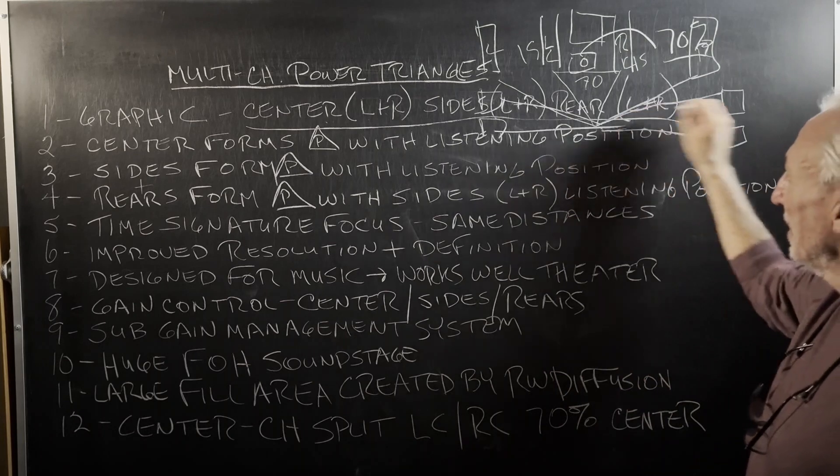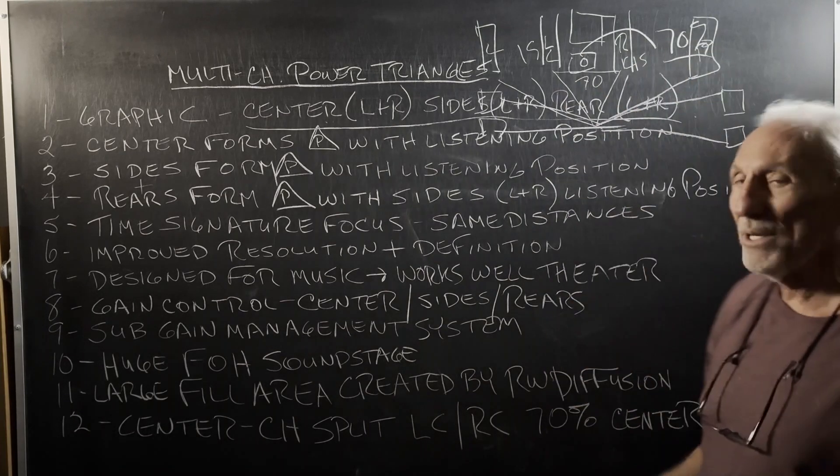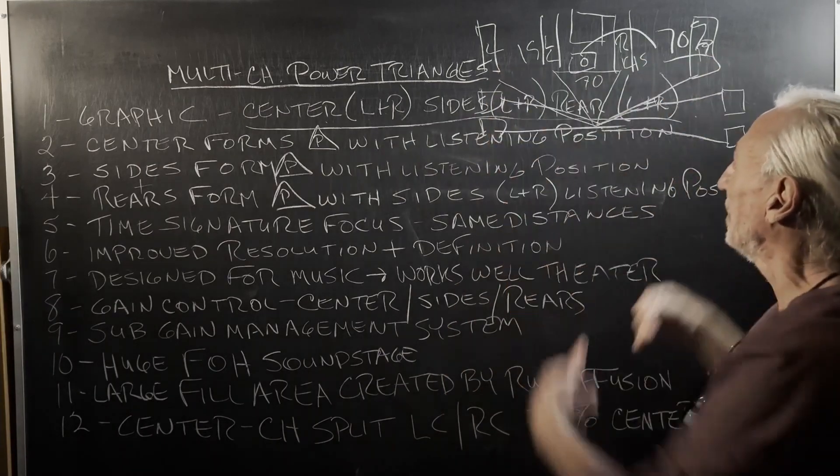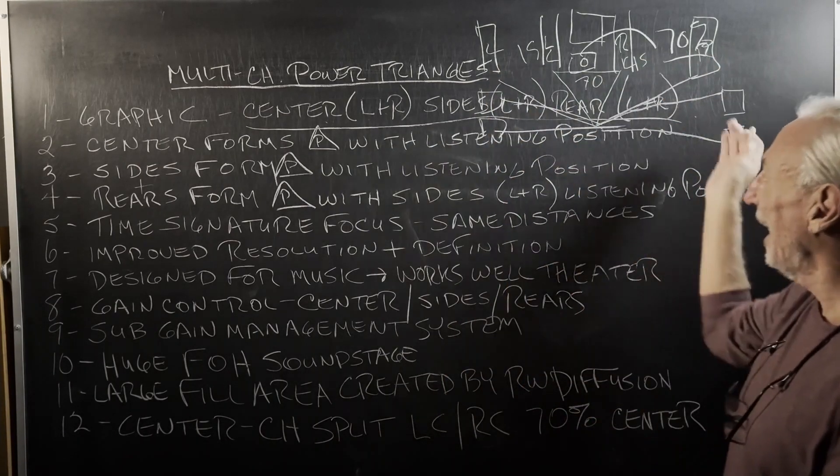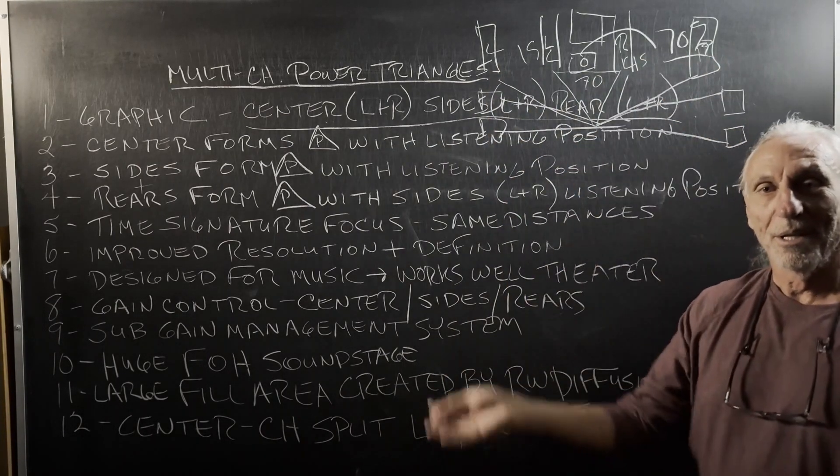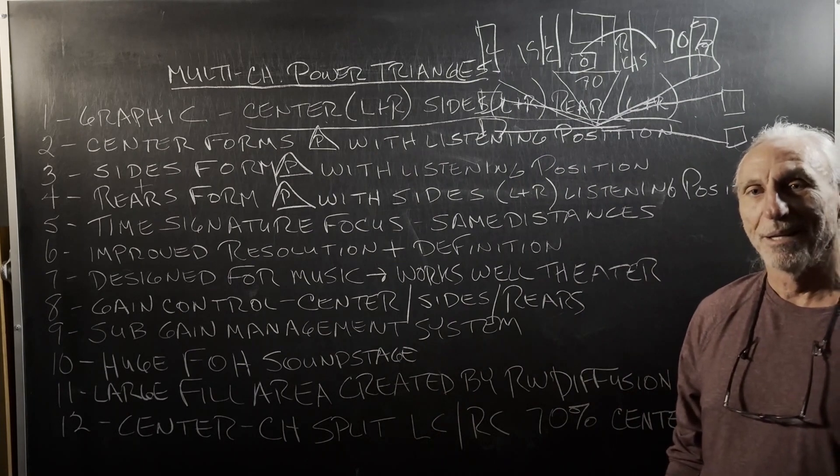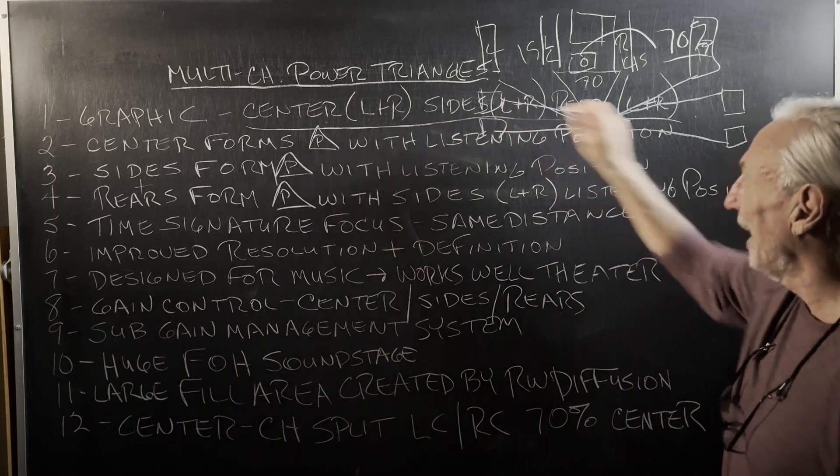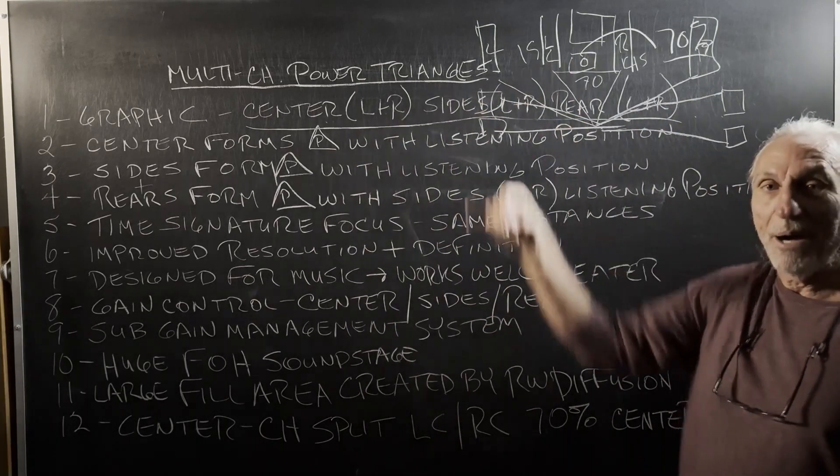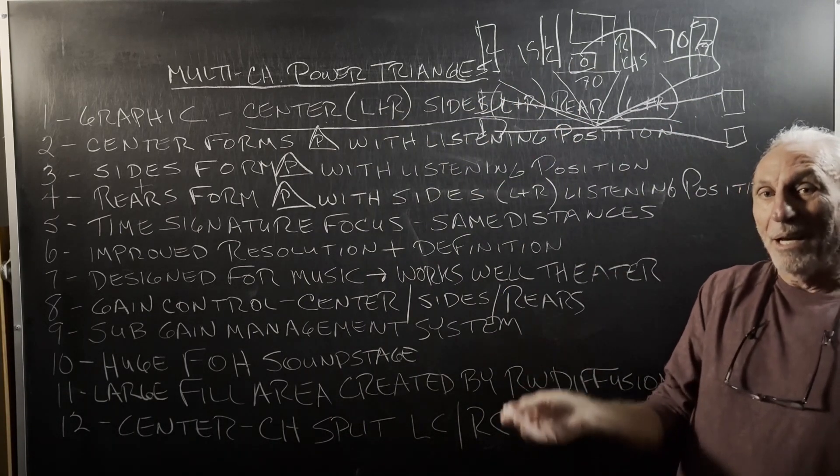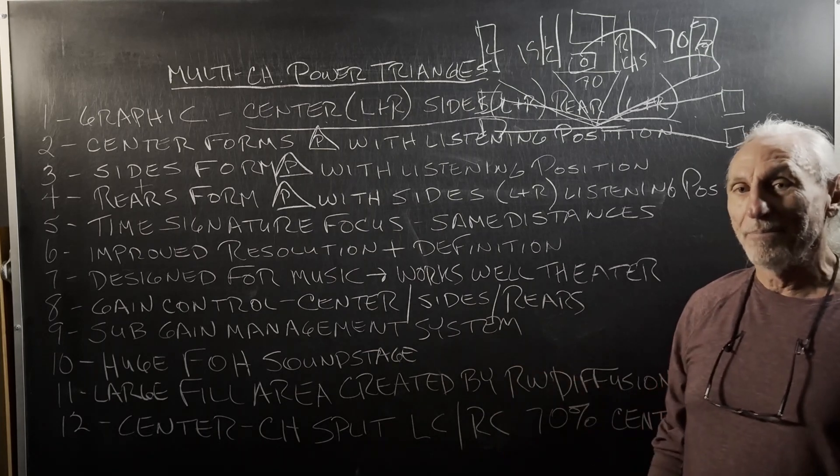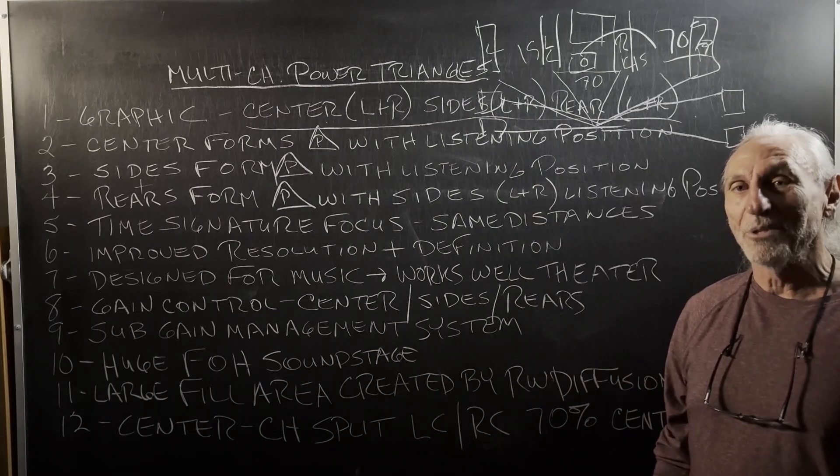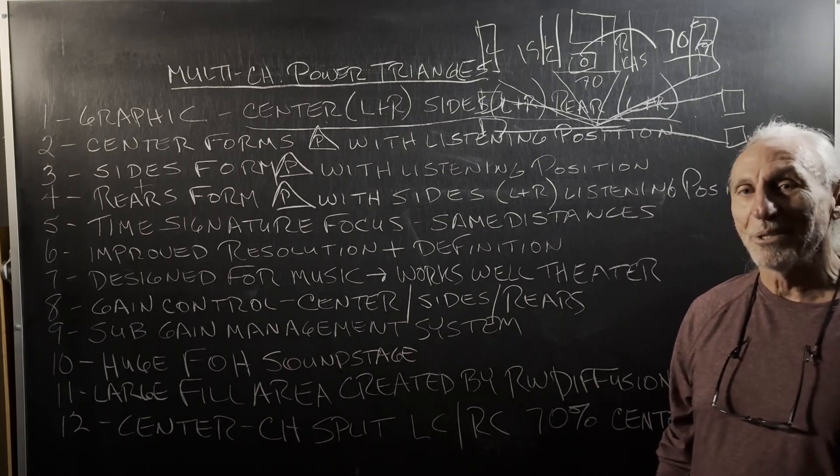But if you get the distances and you get all the time alignment figured out, wow, you can have a huge soundstage with the sides and the rear, just enforcing it, just adding more ambience and stuff. You have to be careful with the sides and the rears. You don't want to overpower the front of the house. You just want to kind of bring up the fill, if you will, and make the room sound larger. Now add diffusion to your room and it'll even sound twice as large.